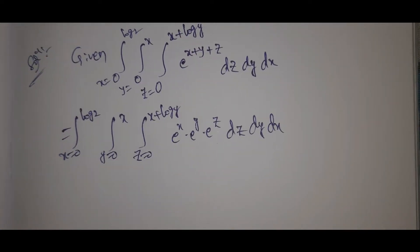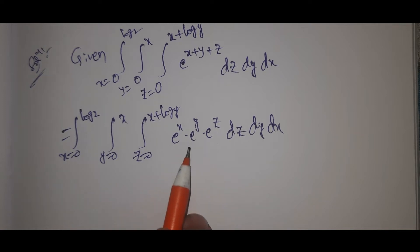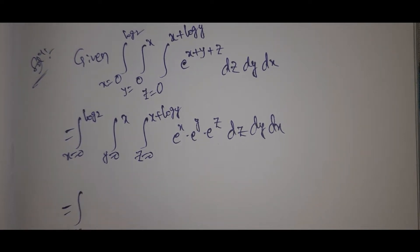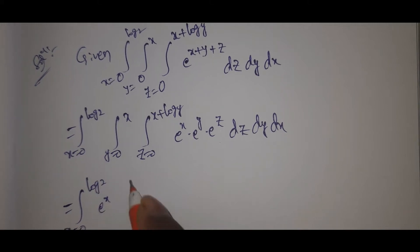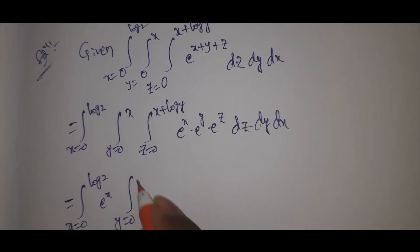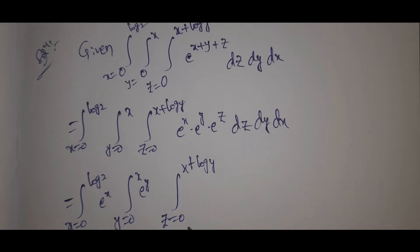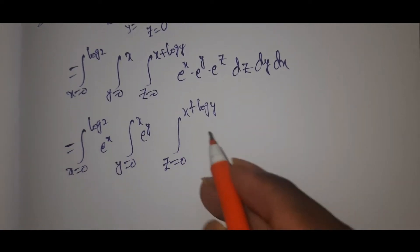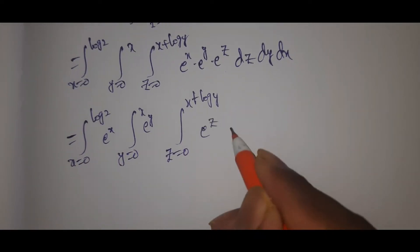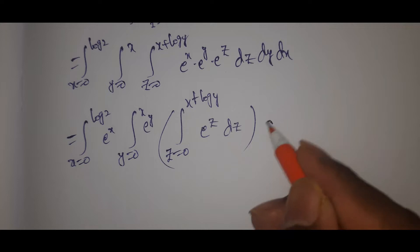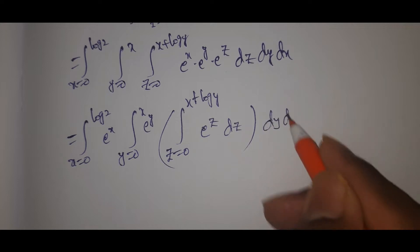We can write e to the power x plus y plus z as e to the power x into e to the power y into e to the power z, since the same-base powers are added. So the integral becomes: x from 0 to log 2 of e to the power x, times y from 0 to x of e to the power y, times z from 0 to x plus log y of e to the power z, dz dy dx.